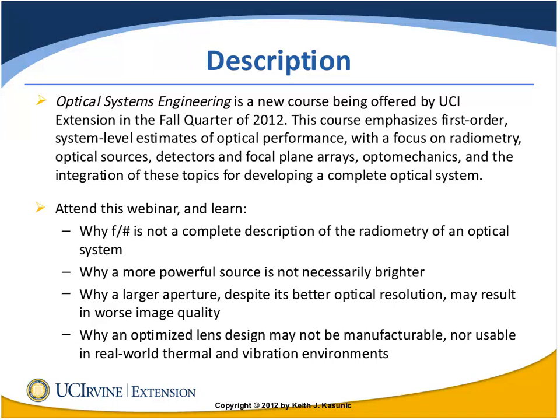There are four questions we'll be working through this morning. The first is a radiometry question: why is F-number not a complete description of the radiometry of an optical system? The second is an optical source question: why might a more powerful source not necessarily be brighter? We're starting to see the connection between radiometry and optical sources, and how we integrate these topics into developing a complete optical system.